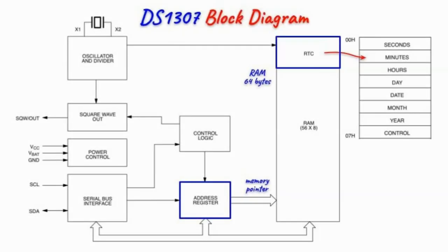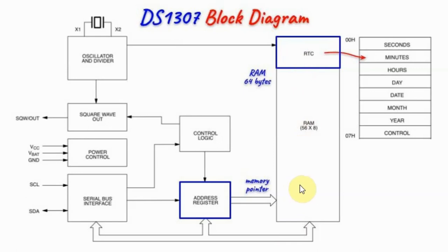A block diagram of the DS1307 is shown here. It has on-board 64 bytes of fully programmable RAM. The first 8 bytes are used for storing time and date, and the remaining 56 bytes can be used by the user for additional data. To access any RAM location for read or write, the user sends an 8-bit value via the I2C bus to program the address register, which generates a memory pointer to the desired location.